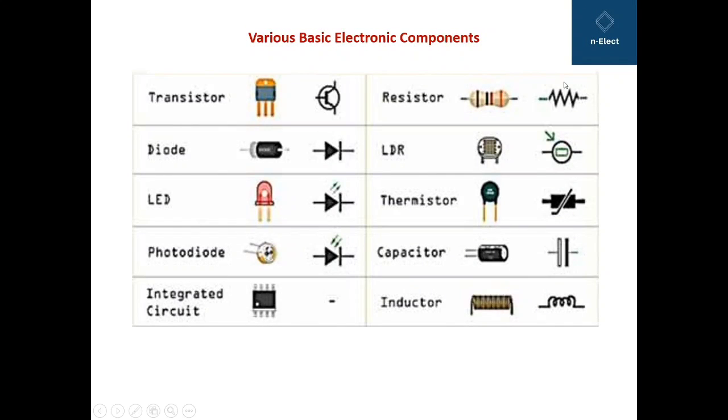Here I am showing you the components which are used in electronics like transistor, diode, LED that is light emitting diode, photodiode, and integrated circuits. These are actually what the components look like and these are the symbolic representations for them.